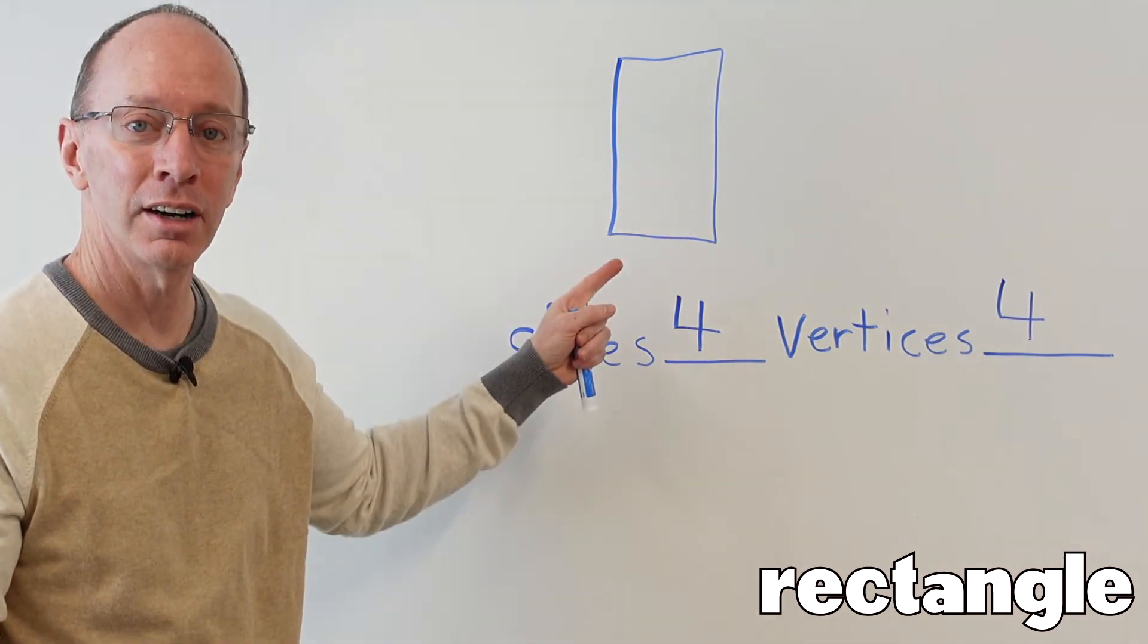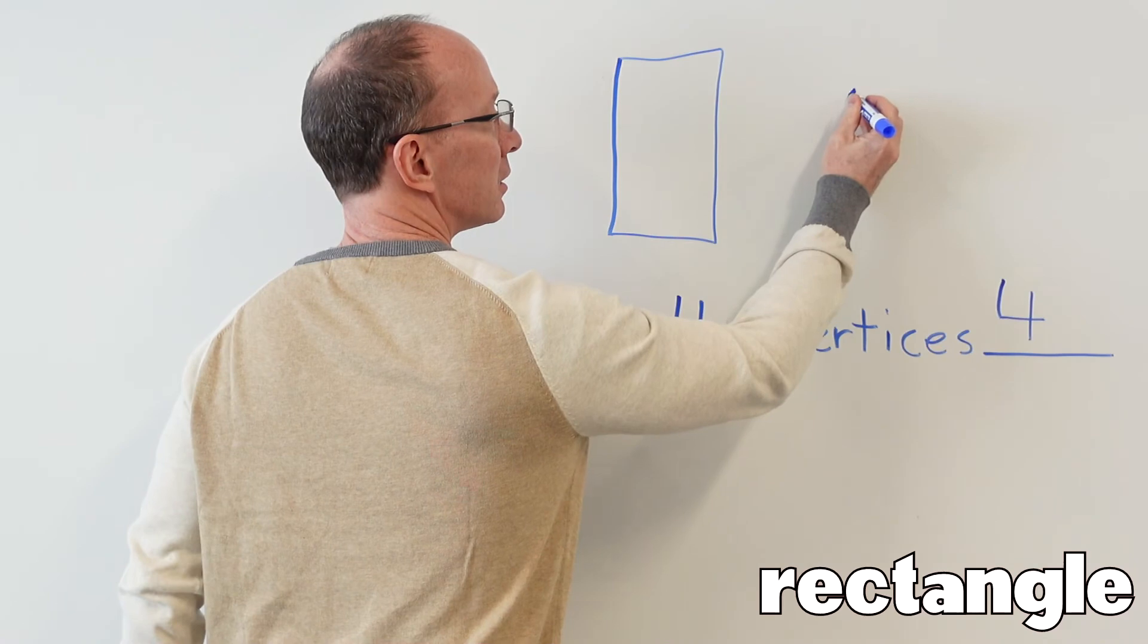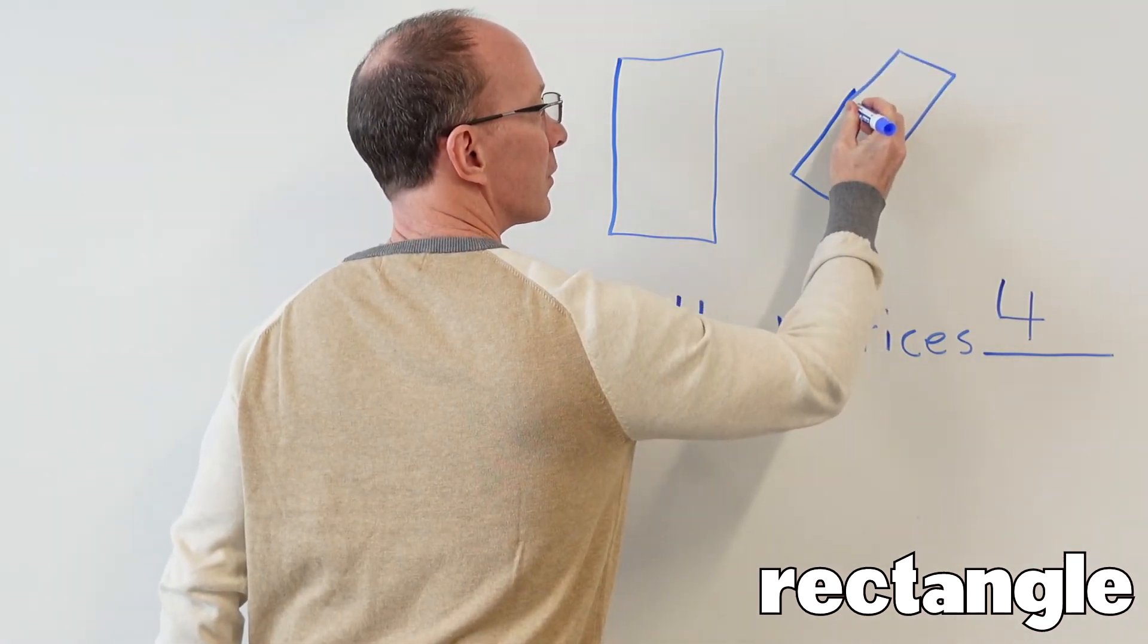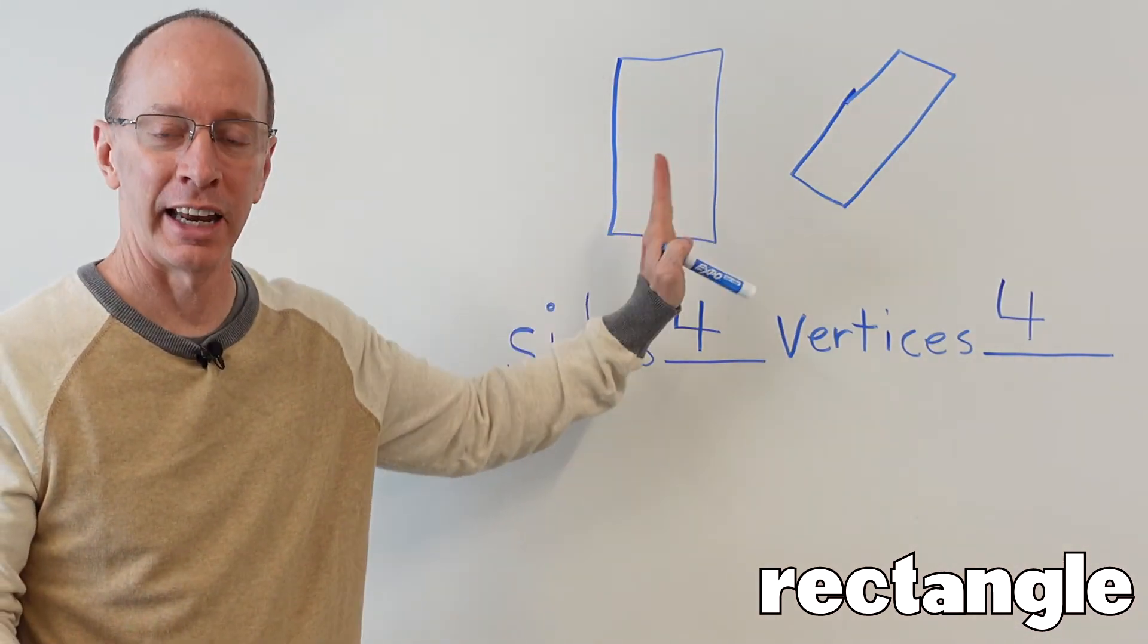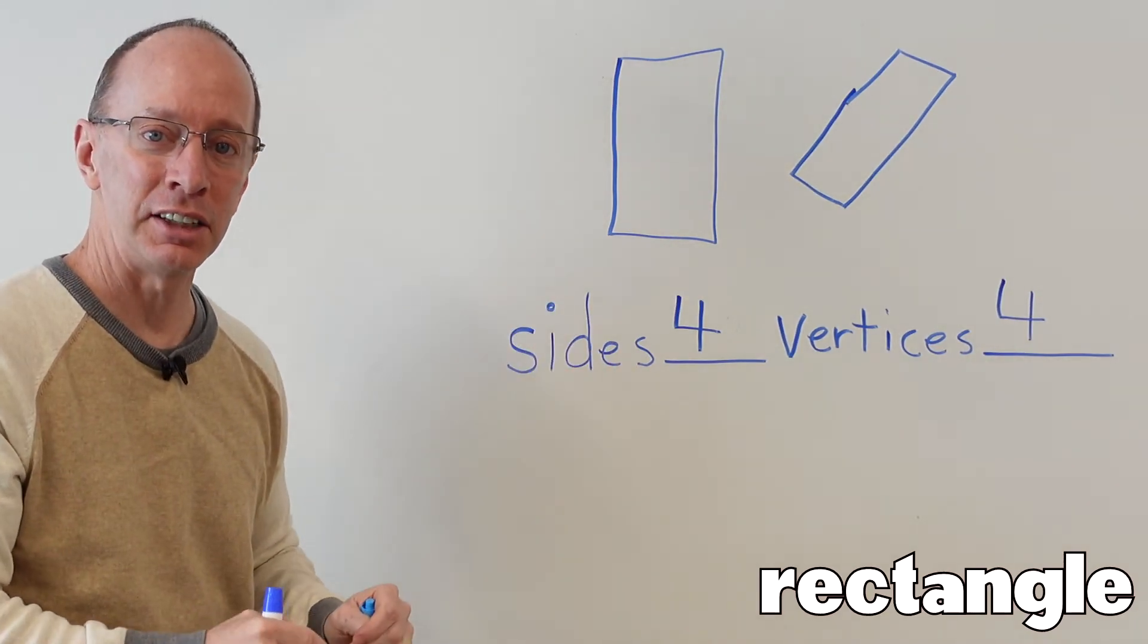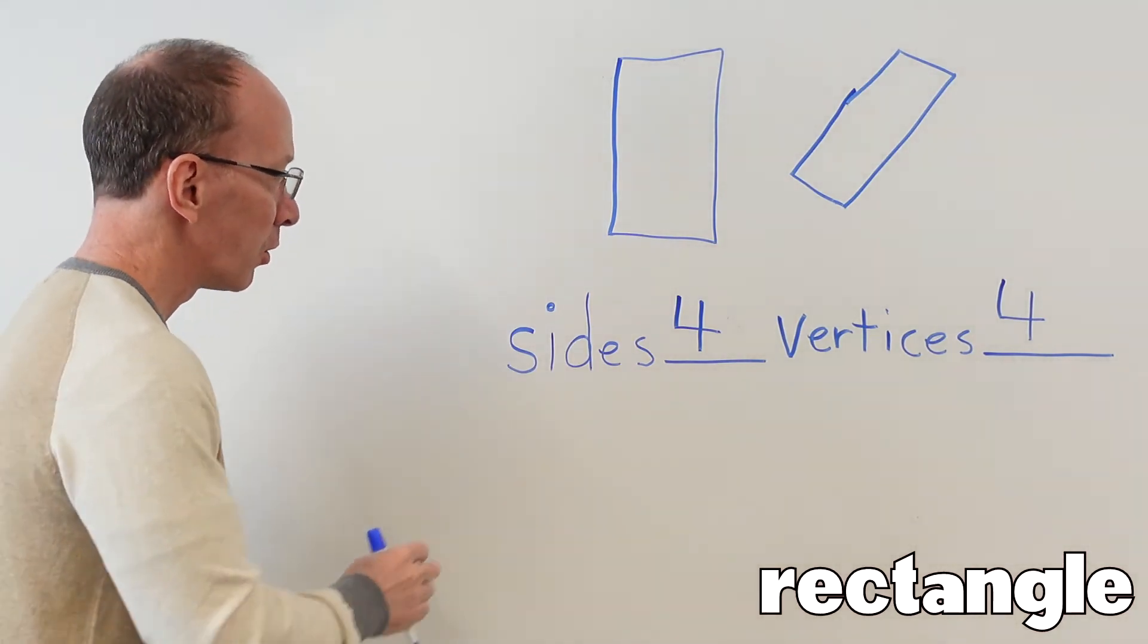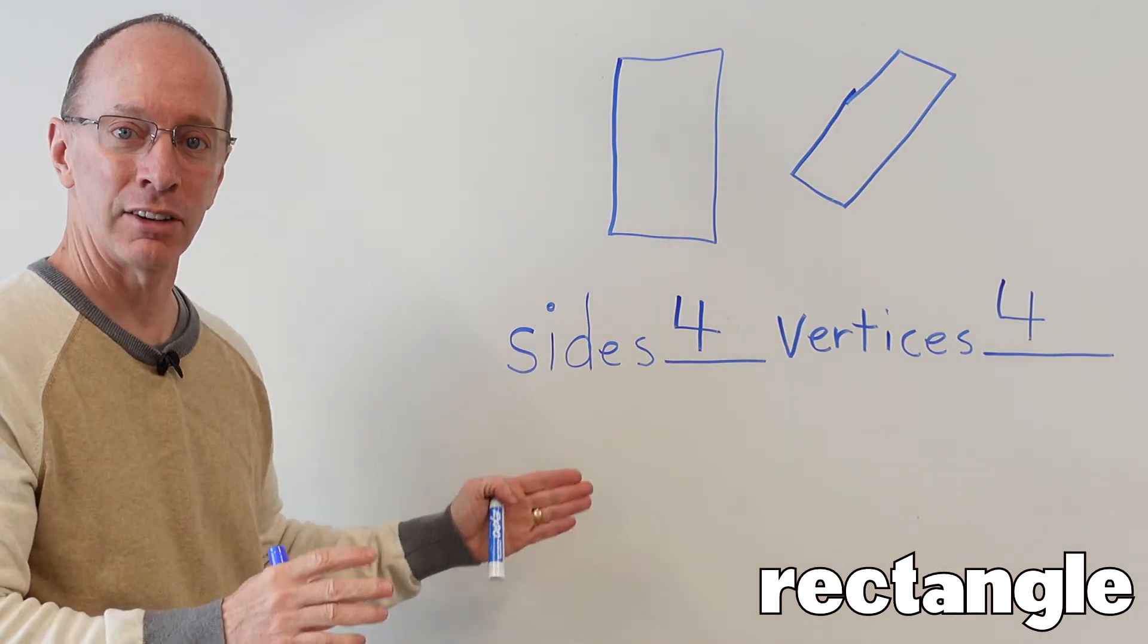You see how the two sides are longer. I can also draw a rectangle like this. So it doesn't have to be just in one direction. It could be slanted. So you might see rectangles in all different shapes and sizes in your classroom or when you're walking around outside. This rectangle has four sides and four vertices.